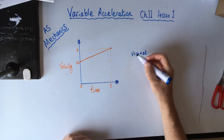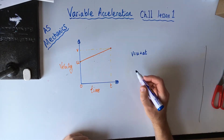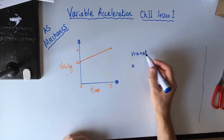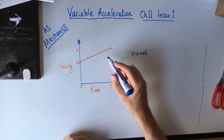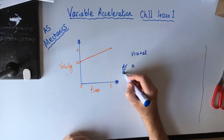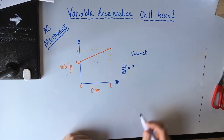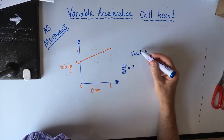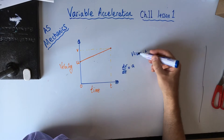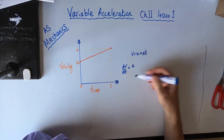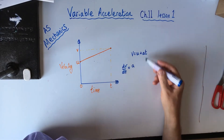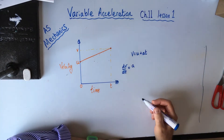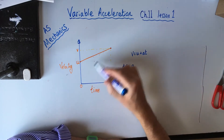The gradient of this line is the acceleration, and acceleration is the change in velocity with time — dv by dt. If we differentiate v equals u plus at, u is just a number so it disappears, and the t term gives us just the acceleration.